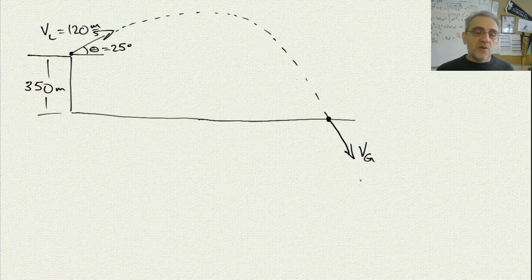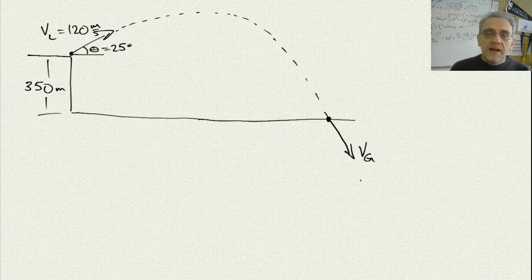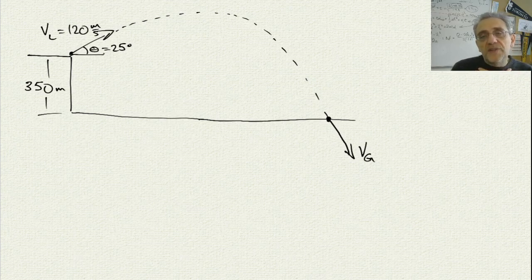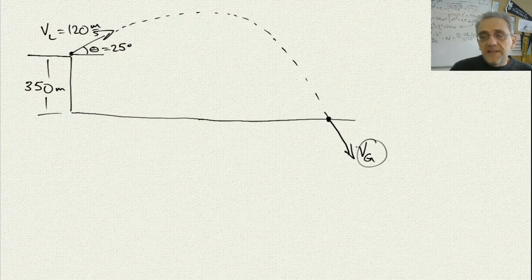Hello everybody, we're back. So today we got a new projectile problem for you. This problem is going to be shooting a projectile from the top of a cliff, 350 meters in height, with a velocity of 120 meters per second, and an angle of 25 degrees to the horizontal. The question is: with what velocity will the projectile hit the ground?